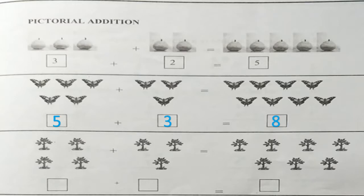We will go to the next one. Count and tell me how many trees do you see. There are six. To that, let's add three more trees. Find out and tell me, children, total how many trees are there. Yes, there are seven trees.